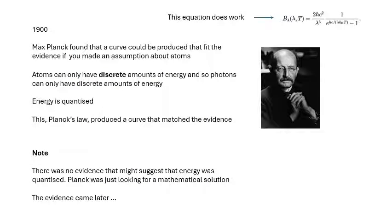Now this bloke here, 1900, Max Planck, basically came up with a mathematical equation and this is his equation here which does work. And to do that equation, he came up with an assumption. And the assumption was that the atoms, the atoms of the object, can only have discrete amounts of energy. And so the photons that they emit can only have certain amounts of energy.